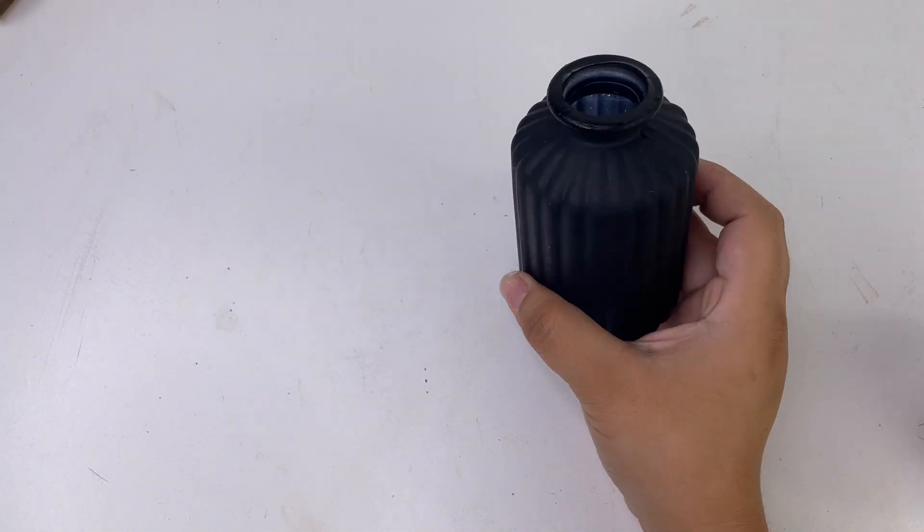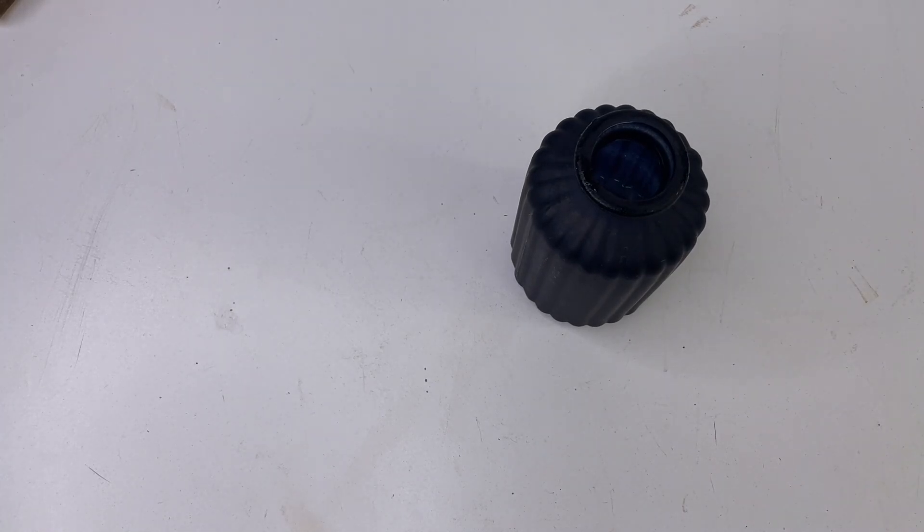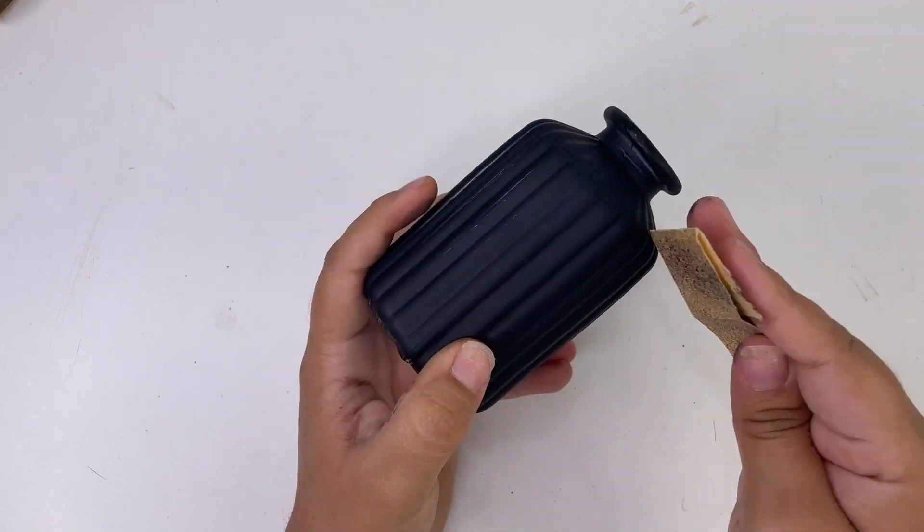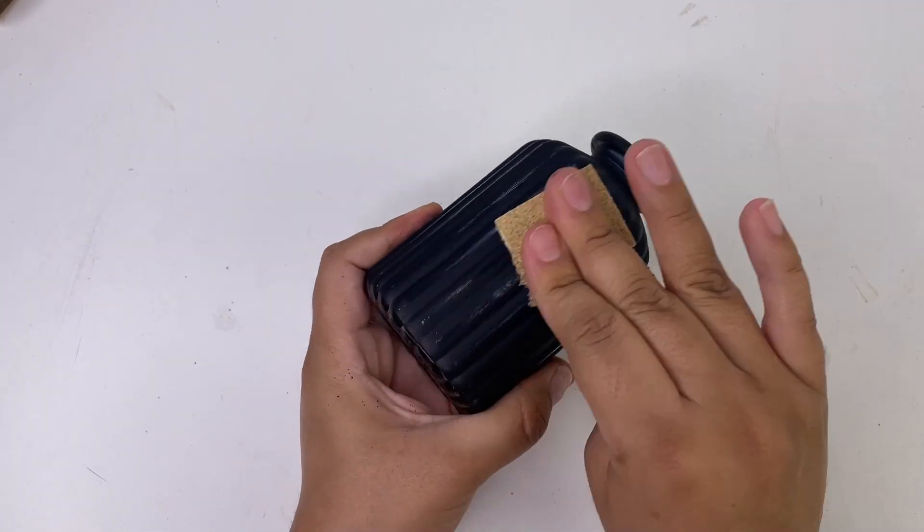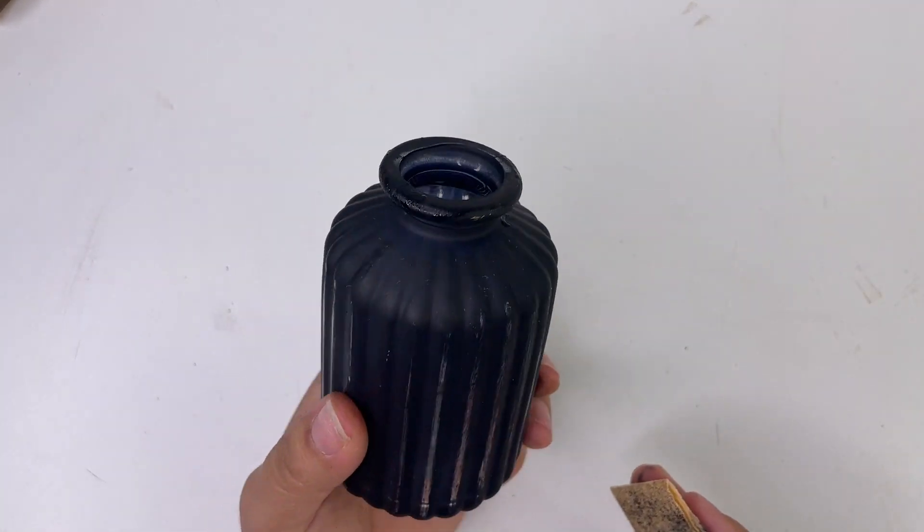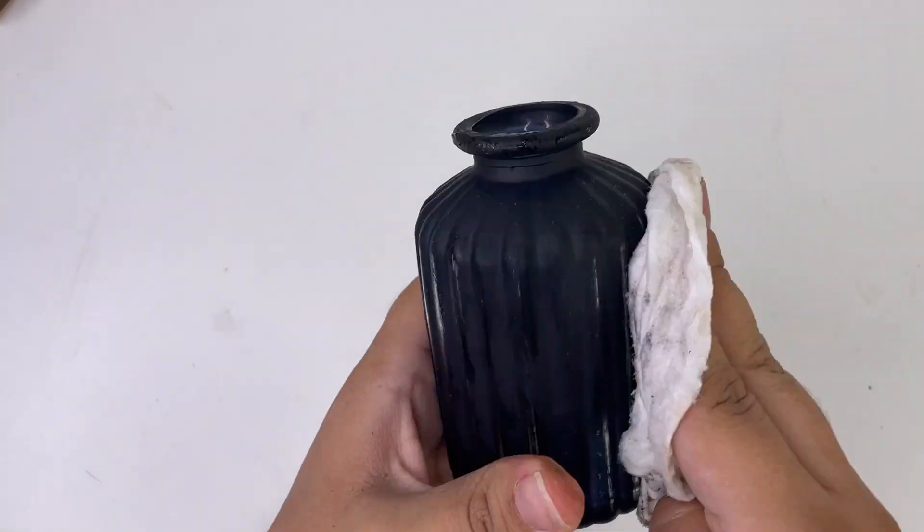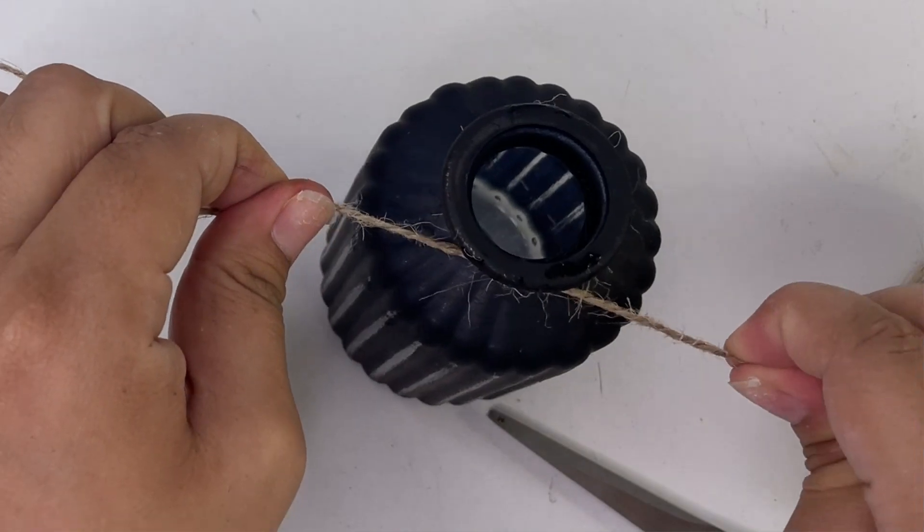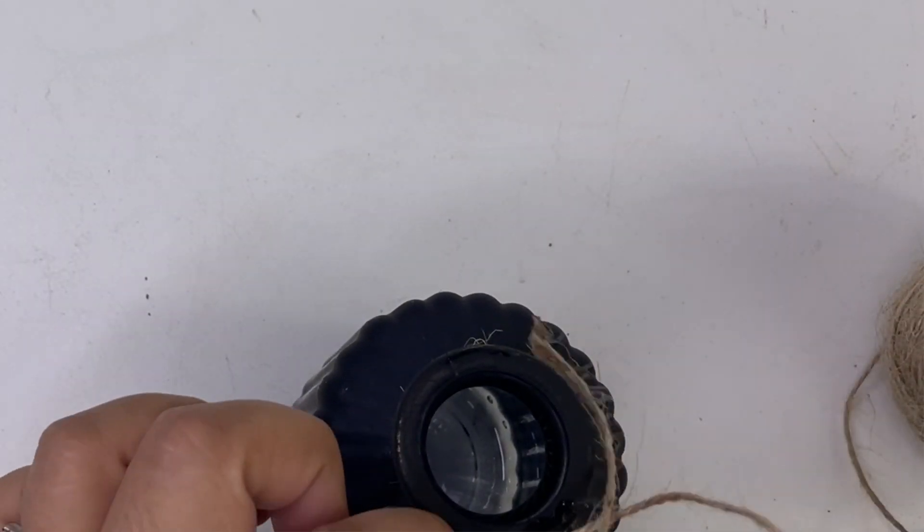To make this look more rustic I'm using a piece of sandpaper and just sanding some of the paint off. To decorate this I will be using some jute twine and making a small little bow.